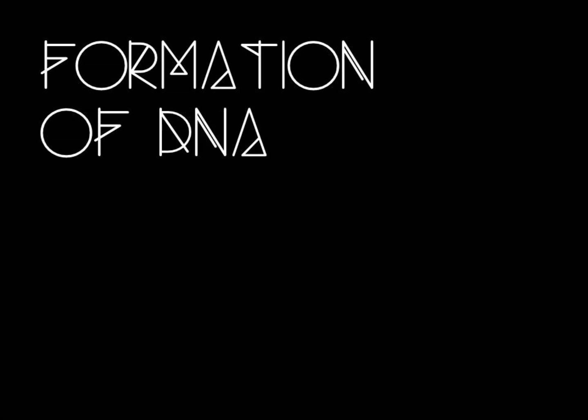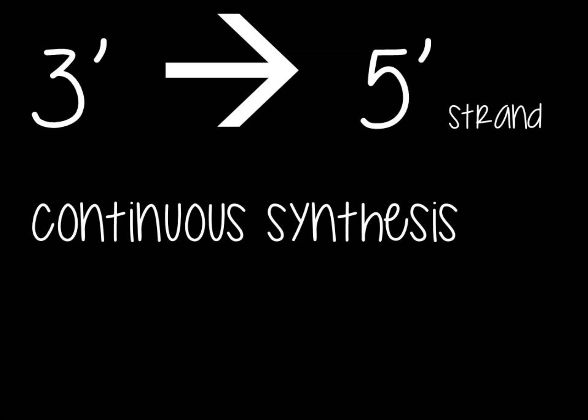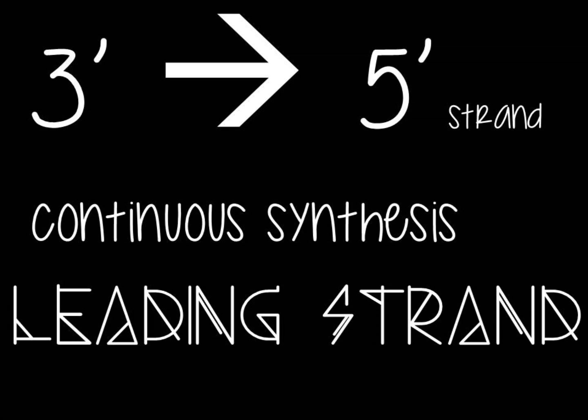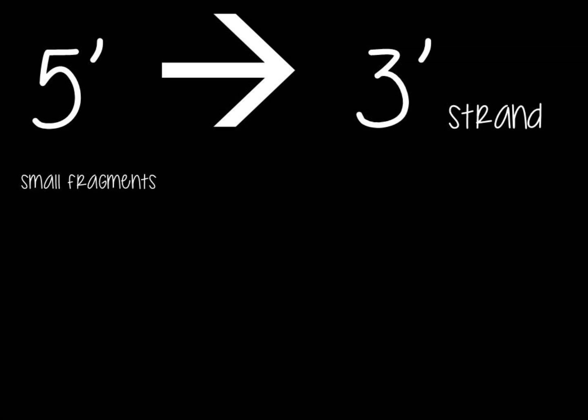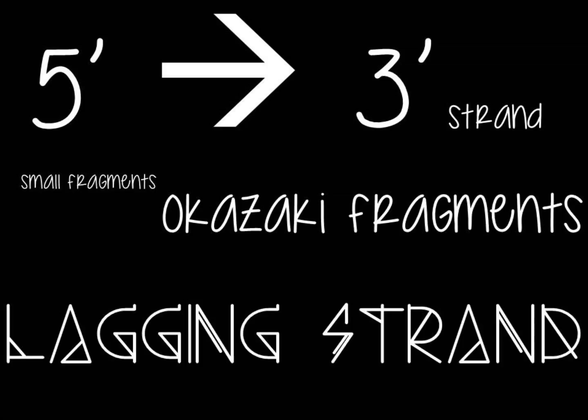In elongation, the formation of DNA always occurs in the 5' to 3' direction. On the 3' to 5' strand, the DNA would be synthesized continuously, and this would be called the leading strand. While on the 5' to 3' strand, DNA would be synthesized in small segments called Okazaki fragments, and later joined together by DNA ligase. This would be called the lagging strand.